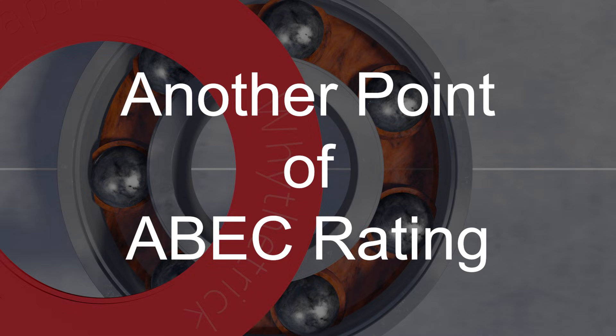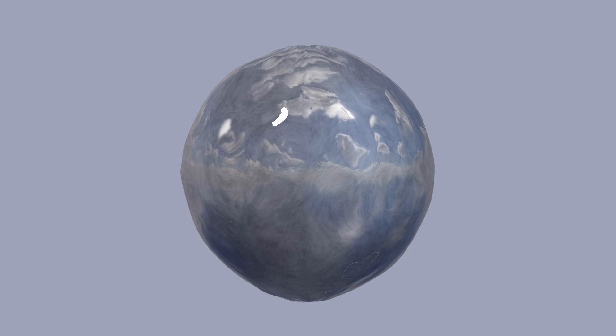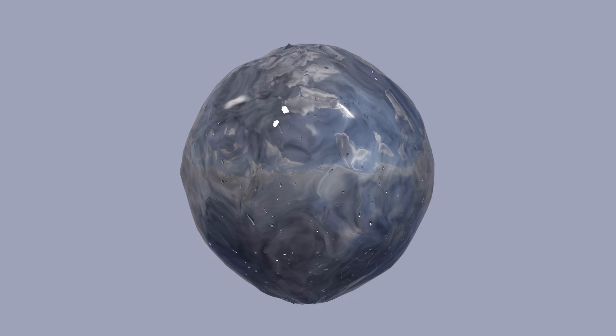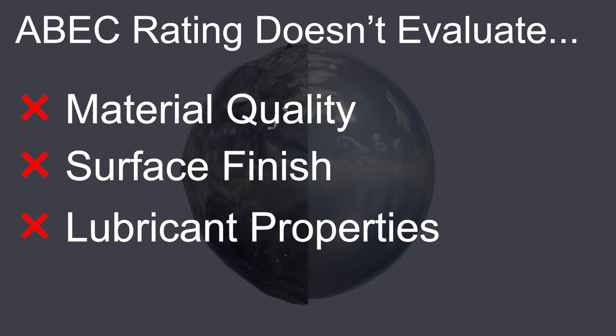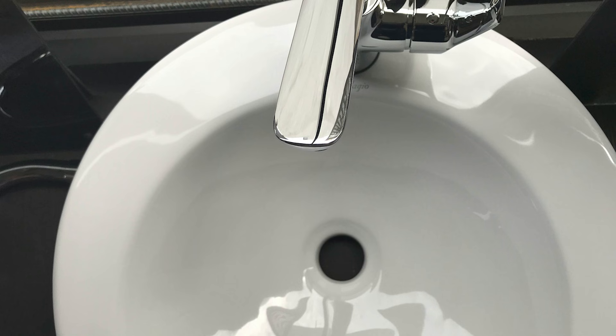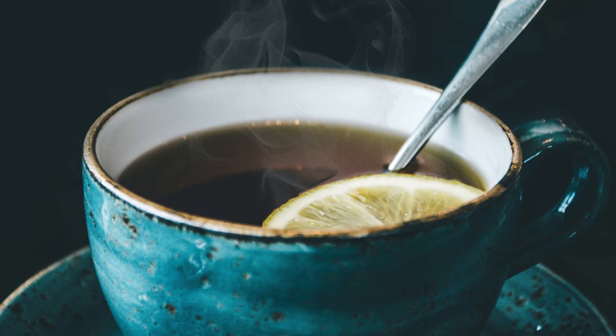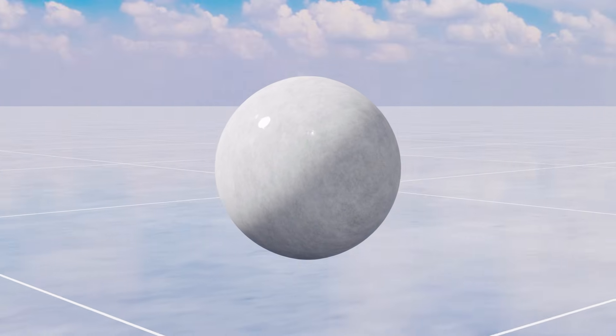There is another important point about ABEC ratings. ABEC ratings only measure how closely the dimensions of bearing components are to their ideal values. It does not evaluate material quality, surface finish, lubricant properties, or other crucial factors. Speaking of materials, let's talk about ceramic balls. Ceramic is the same material used in cups and plates. It doesn't rust, and it's extremely hard, so it won't deform.